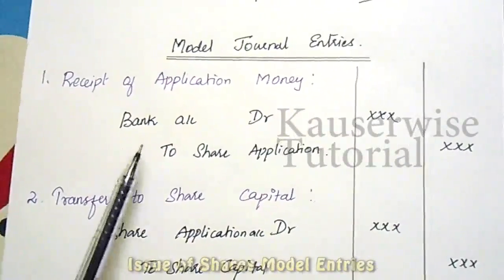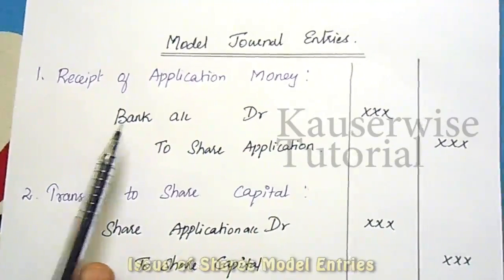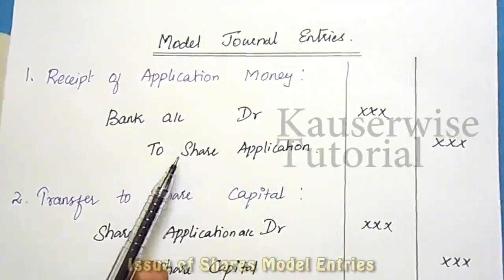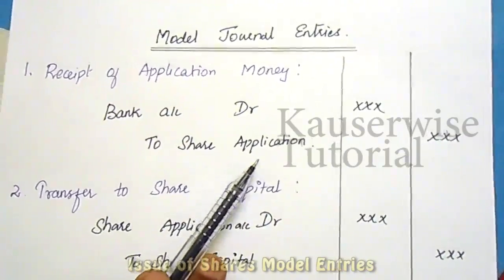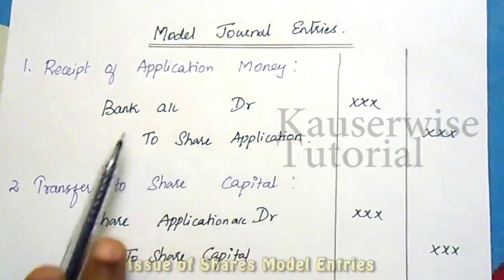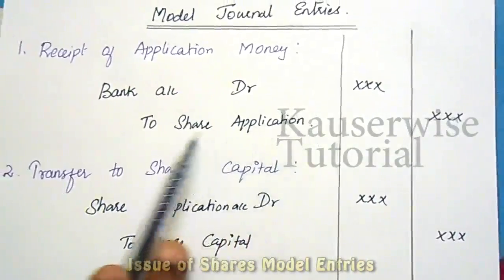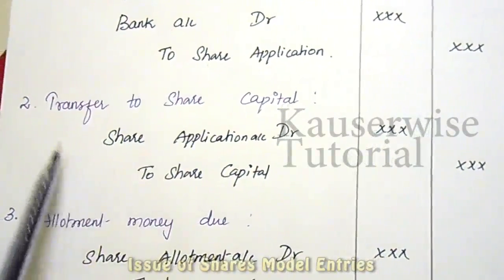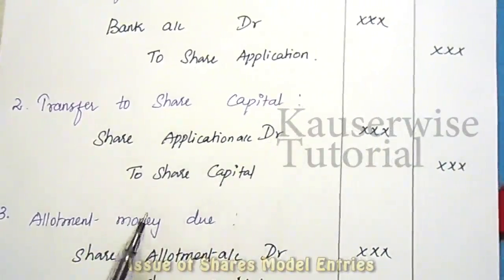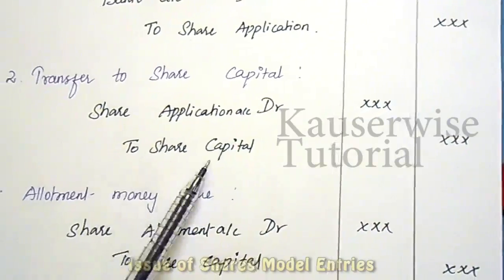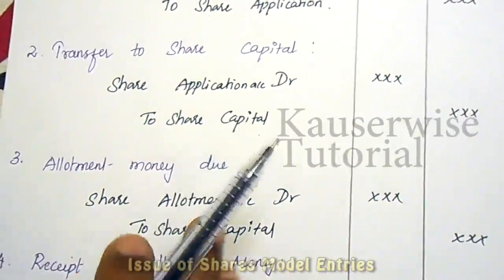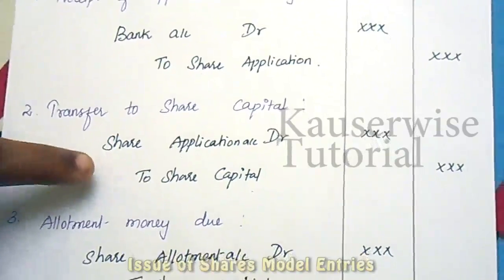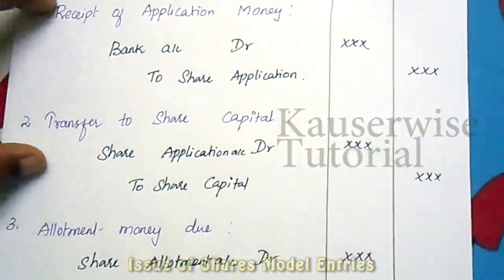The first model journal entry is when application money is received from the public: Bank Account Dr. to Share Application. After receiving application money it is transferred to share capital: Share Application Account Dr. to Share Capital. So two entries are made — one for receiving application money, and one for transferring it to share capital.